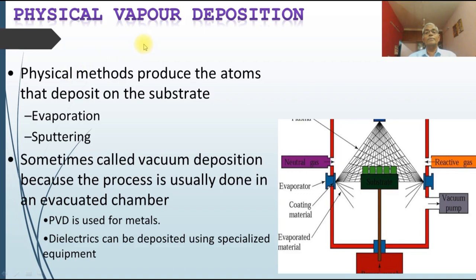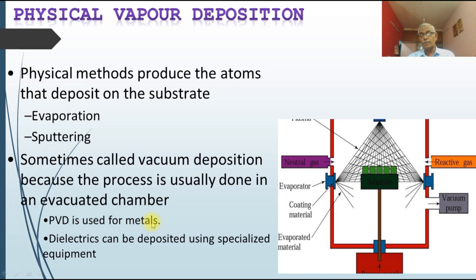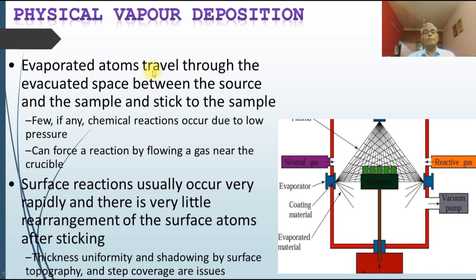The third method is physical vapor deposition (PVD). As the name suggests, the material is vaporized and then deposited on a substrate. A neutral gas is used so it does not react with residual gas, and the vapors are allowed to settle on the substrate. It is also called vacuum deposition because no residual gas is allowed in, preventing impurities. PVD is generally used for metals and dielectrics.